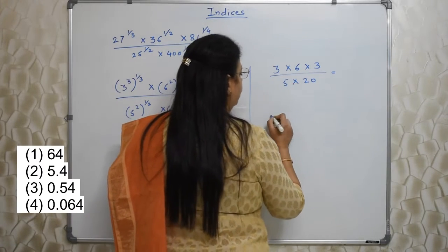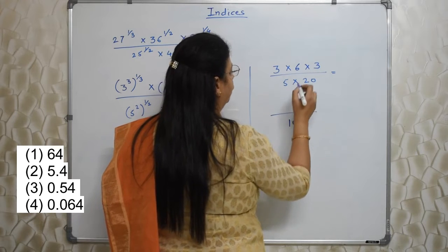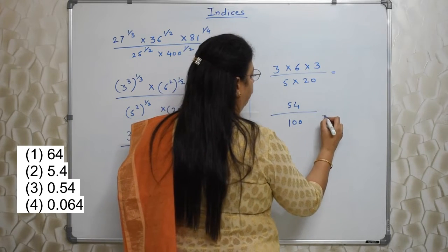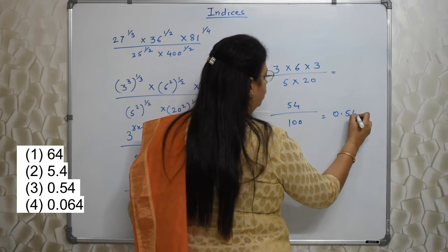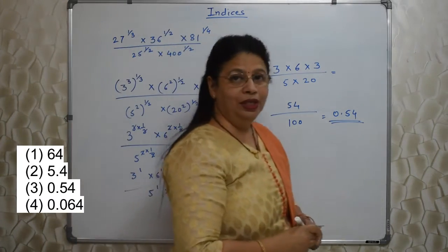Keep it like that. So this 100 I am keeping it like that. 3 into 6 is 18. 18 into 3 is 54. 54 upon 100 is 0.54. This is the answer. So easy.